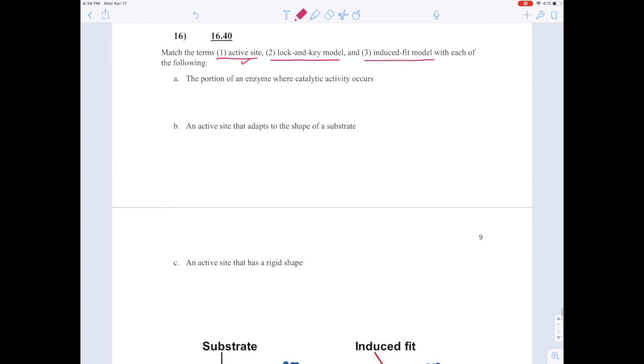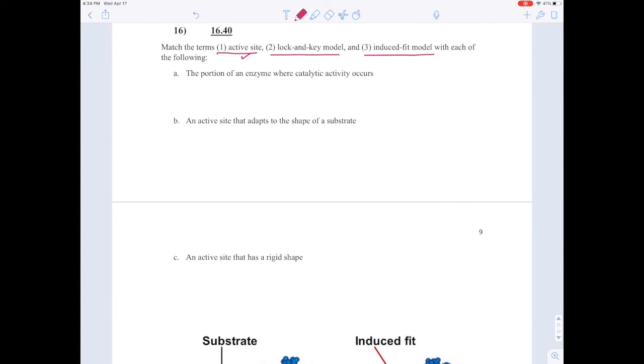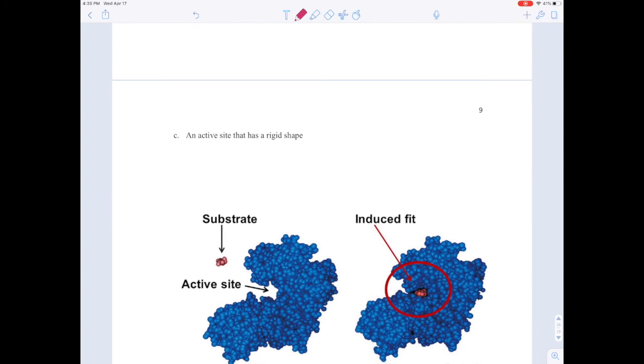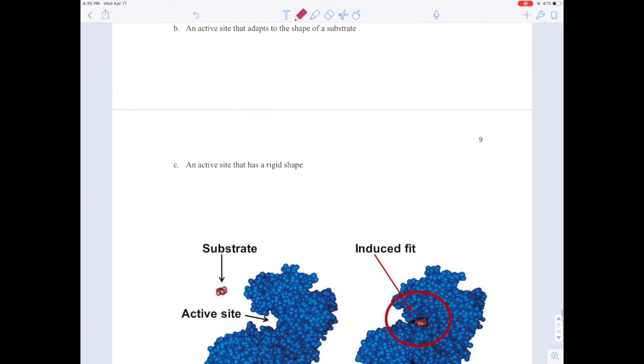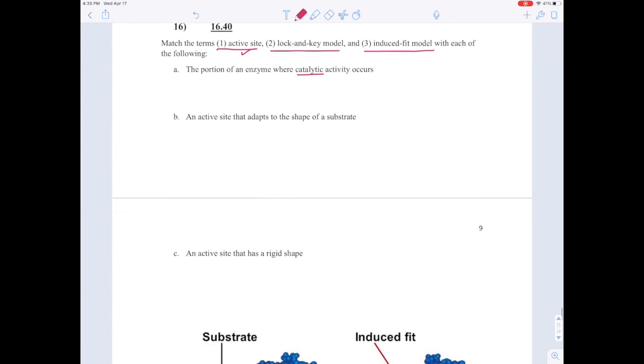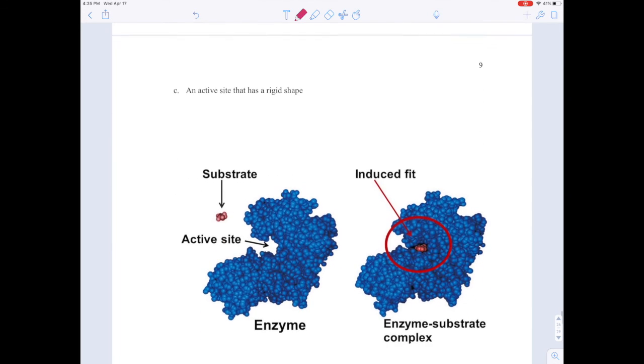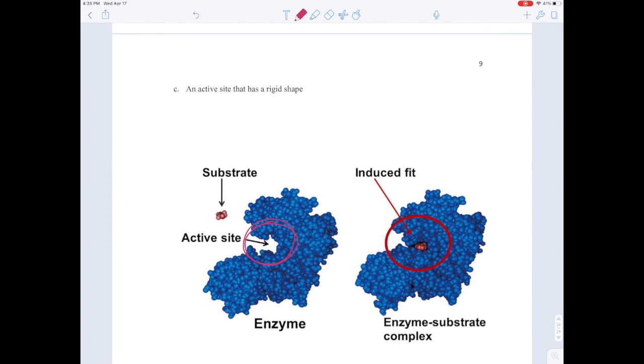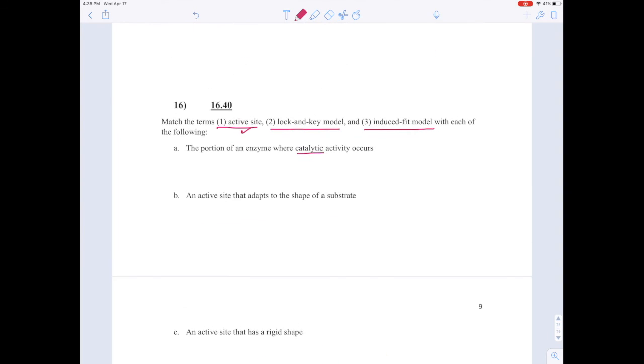We're armed with those terms, we'll approach these descriptions. So A says the portion of an enzyme where catalytic activity occurs. The word catalytic just means that you're making something happen faster. A catalyst is something that makes a reaction happen faster. Enzymes are biological catalysts. They're proteins that make reactions happen faster. So what part of the enzyme makes the reaction happen faster? The active site.